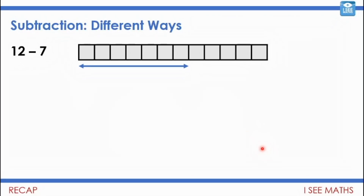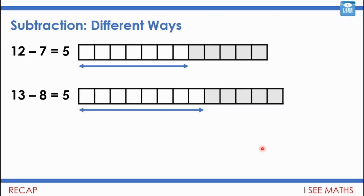We're going back to think about some different methods for subtraction. We looked at this technique a number of weeks ago. 12 subtract 7 — what's the difference between 12 and 7? 12 subtract 7 equals 5. The difference between 12 and 7 is 5. Now that's the same as the difference between 13 and 8. 13 subtract 8 is also 5.